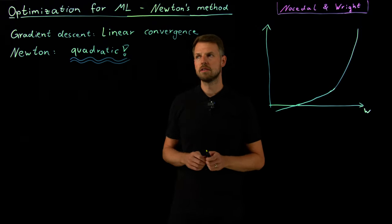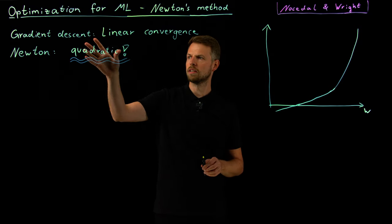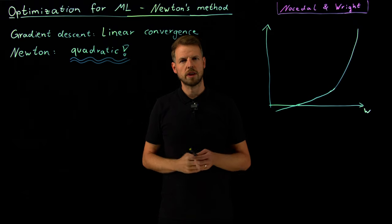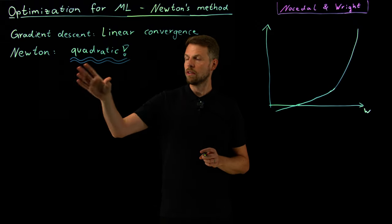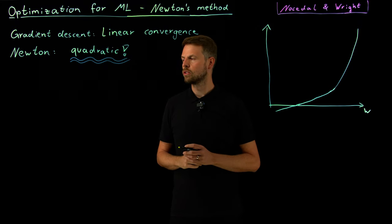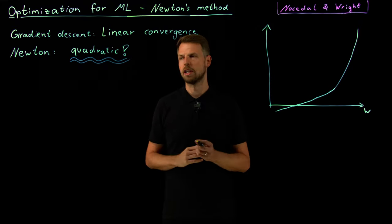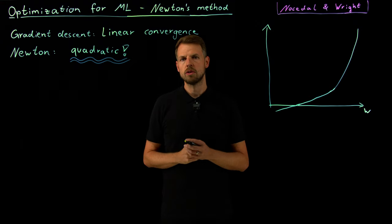And if you recall, the last video ended with a discussion on linear convergence for gradient descent. And even though this is widely used in machine learning, it is also favorable to have higher order convergence rates. We talked about superlinear convergence, and I gave a very brief glimpse that Newton's method would have quadratic convergence. And this is what this video is all about.